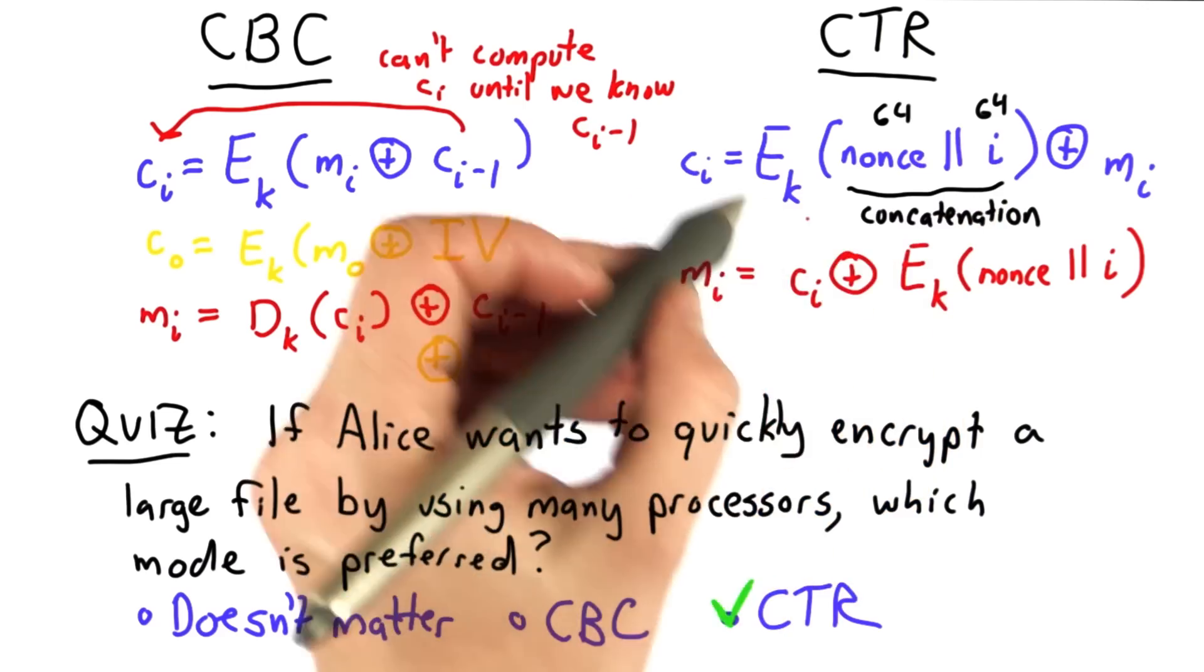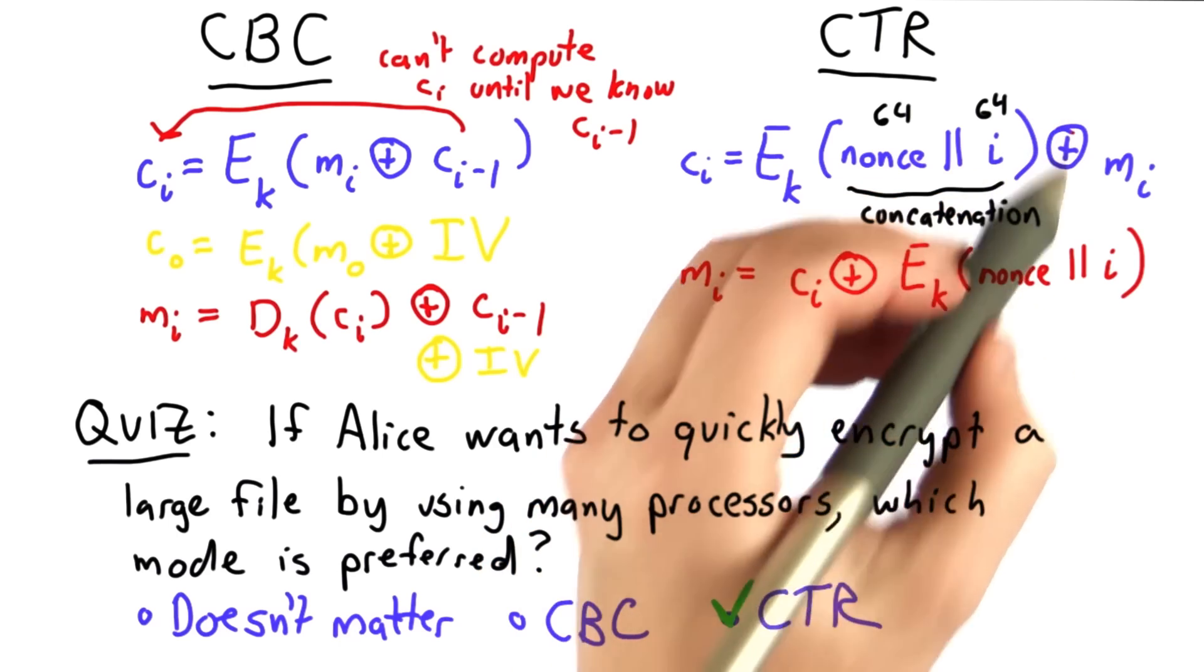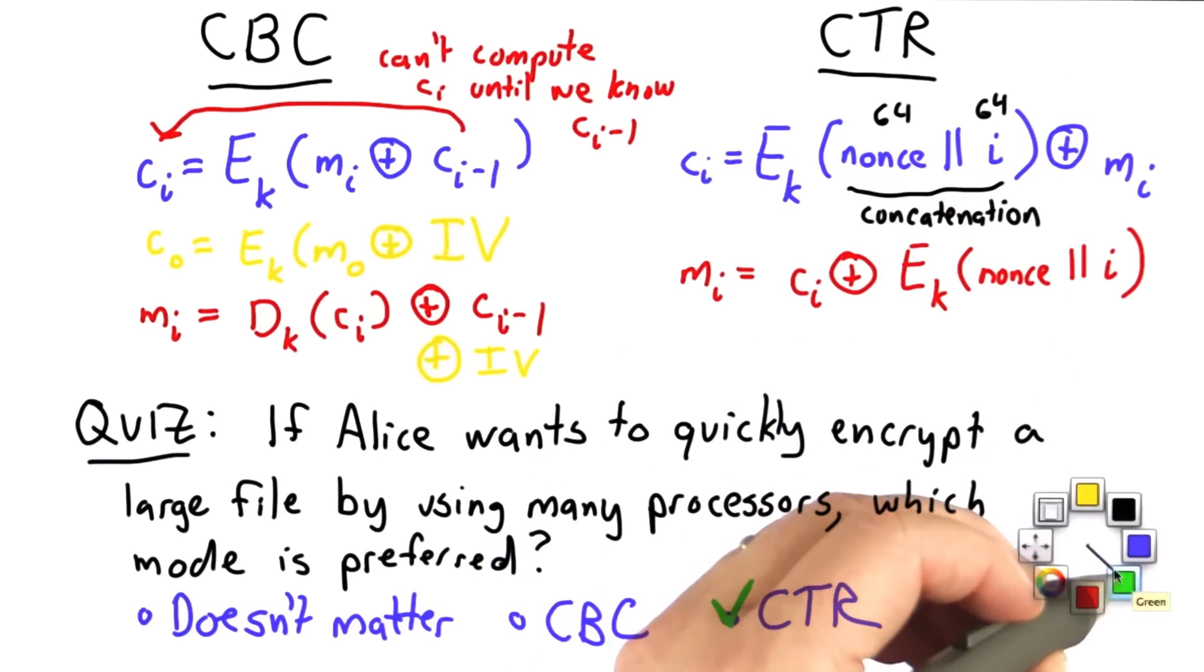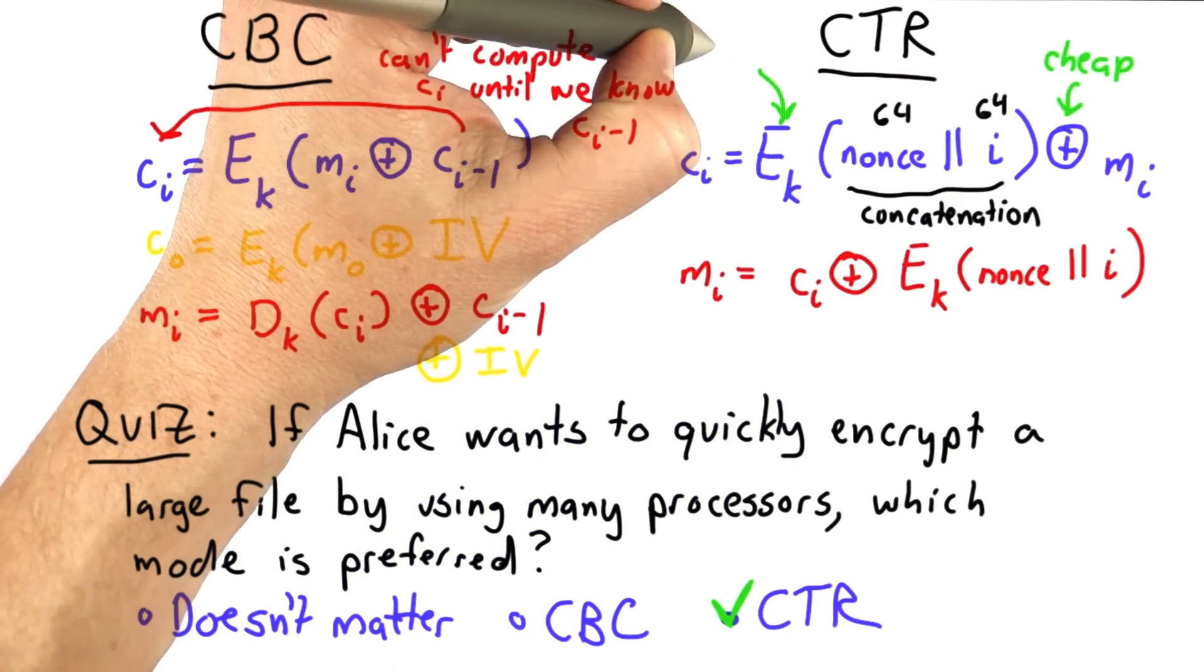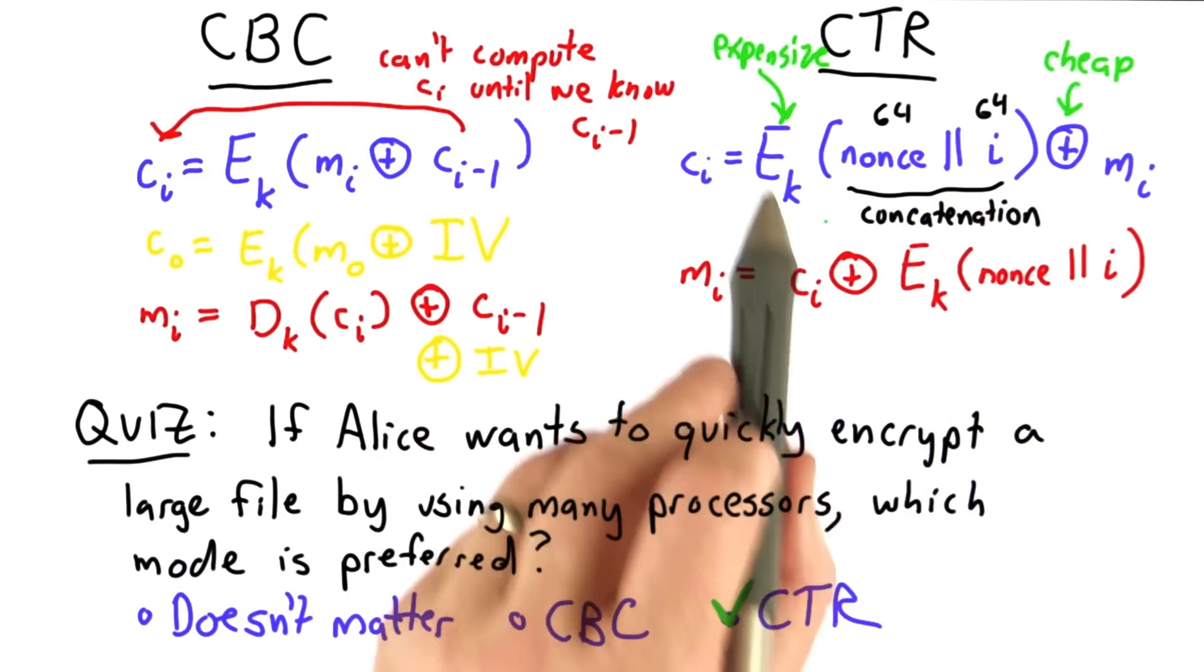With counter mode, we can actually compute all these encryptions before we even know the message. These values—the expensive operation here is not the XORs. XORs are very cheap. Encryption is expensive. We can actually precompute for a given nonce all of these encrypted counters.